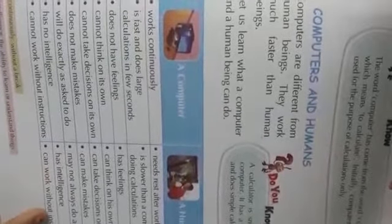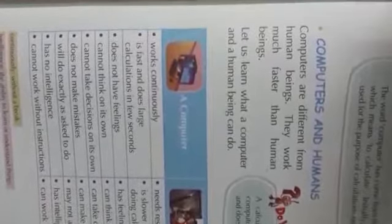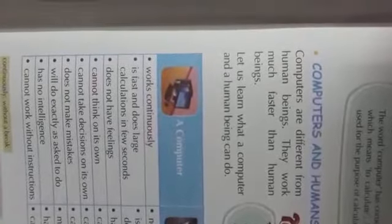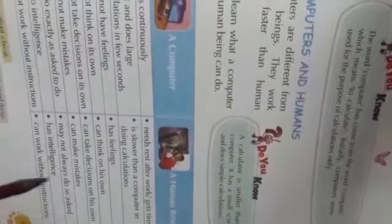A computer cannot take decisions on its own — we have to give it instructions. But a human being can take decisions on its own. A computer has no intelligence — intelligence means the ability to learn or understand things. But a human being has intelligence and can understand things. The last point: a computer cannot work without instructions; if we don't give it instructions, it can do nothing. But a human being can work without instructions. Learn all these differences at home.